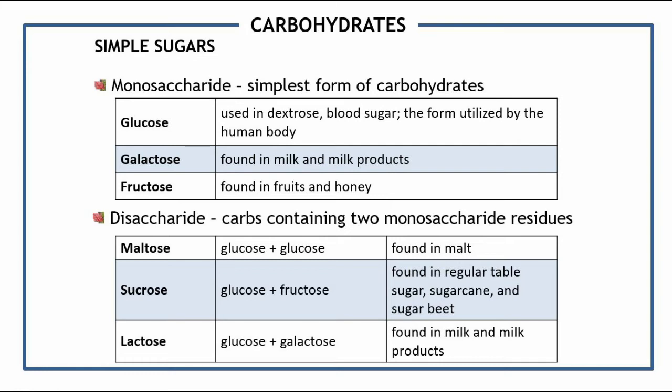Another disaccharide is sucrose, a combination of glucose and fructose, found in regular table sugar, sugar cane, and sugar beet. Sugar beet is a plant whose roots have a high concentration of sucrose and is grown commercially for sugar production. Next is lactose, a combination of glucose and galactose, found in milk and dairy products. You may be familiar with lactose intolerance, which occurs when the body cannot digest the lactose in milk or dairy products.